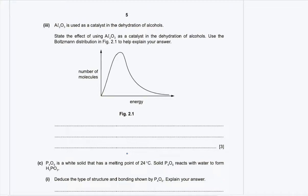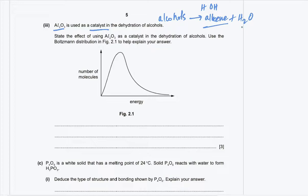Part B3: aluminum oxide is used as a catalyst in the dehydration of alcohols. Dehydration of alcohols removes H₂O to form an alkene plus H₂O. A catalyst provides a lower activation energy by offering an alternative pathway. More molecules will have energy greater than the activation energy, increasing the frequency of effective collisions.